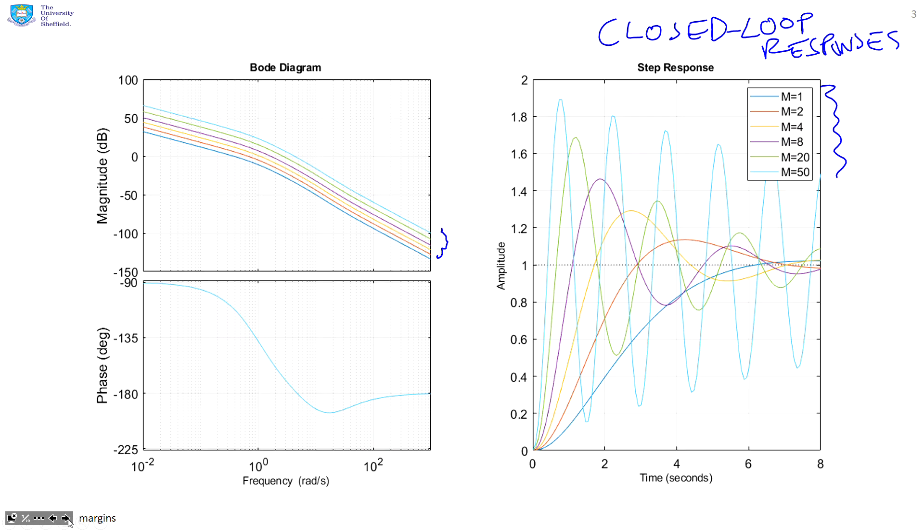If I look at those closed-loop responses, this one here corresponds to m equals 1. I'm fairly happy with that. This one corresponds to m equals 2, not too bad, I might live with that. What about m equals 4? It's beginning to be a bit too oscillatory, I'm probably not that happy. And the bigger m's, I'm really not happy.